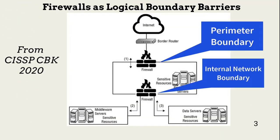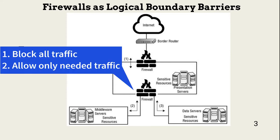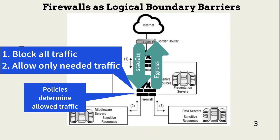Firewalls establish boundaries. These boundaries can be at the overall network perimeter, or they can be between network segments. Organizations can implement firewalls with software, hardware, or both. In general, we set a firewall policy to block all traffic, both incoming and outgoing, or egress. Network admins then set filtering policies in each firewall that specify what packets and traffic behavior is allowed. The policy set on each firewall, and what each firewall can filter, depends on the type of firewall used.